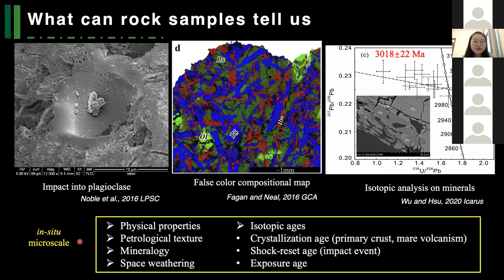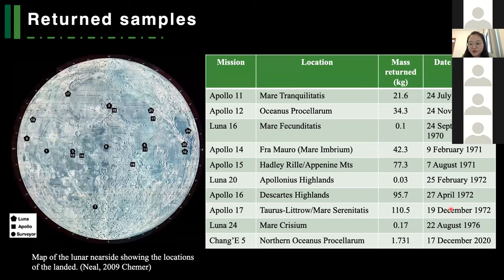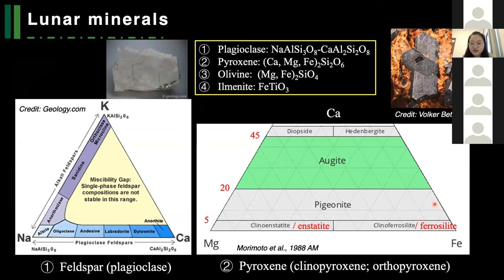Most sample return missions were conducted during the Soviet and USA space race of the 1960s and 1970s. These are rocks returned by Apollo and these are rocks returned by Luna missions. In December 2020, our Chang'e-5 mission also returned lunar soil samples weighing 1.7 kilograms. It has been over 40 years since the last sample return missions. Thanks to the returned samples, we know the chemical components of the moon and most importantly what minerals are in lunar rocks.